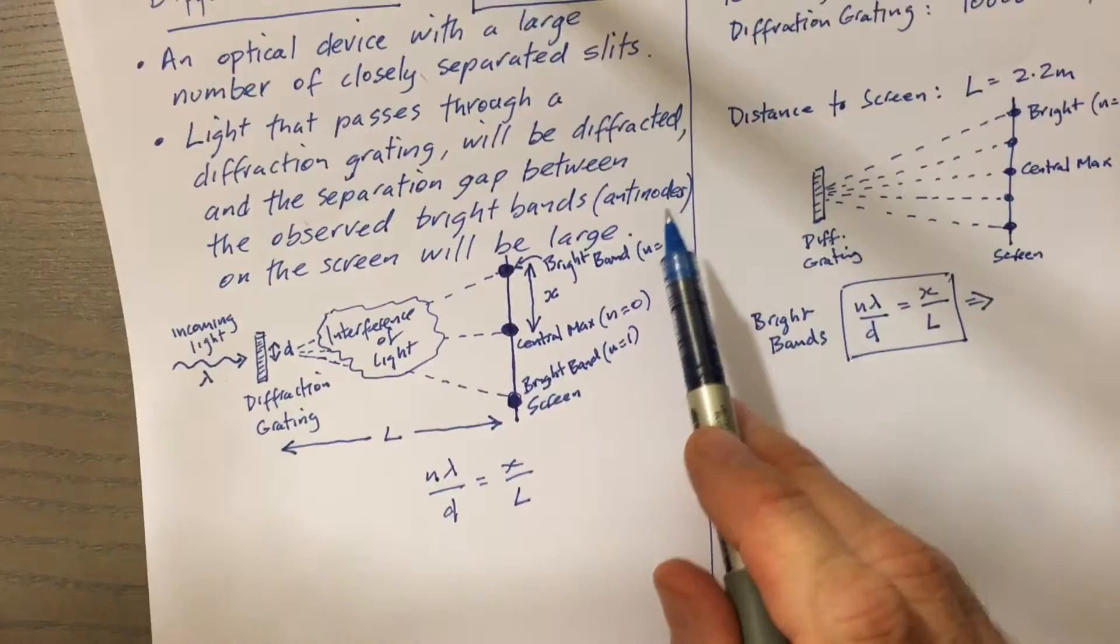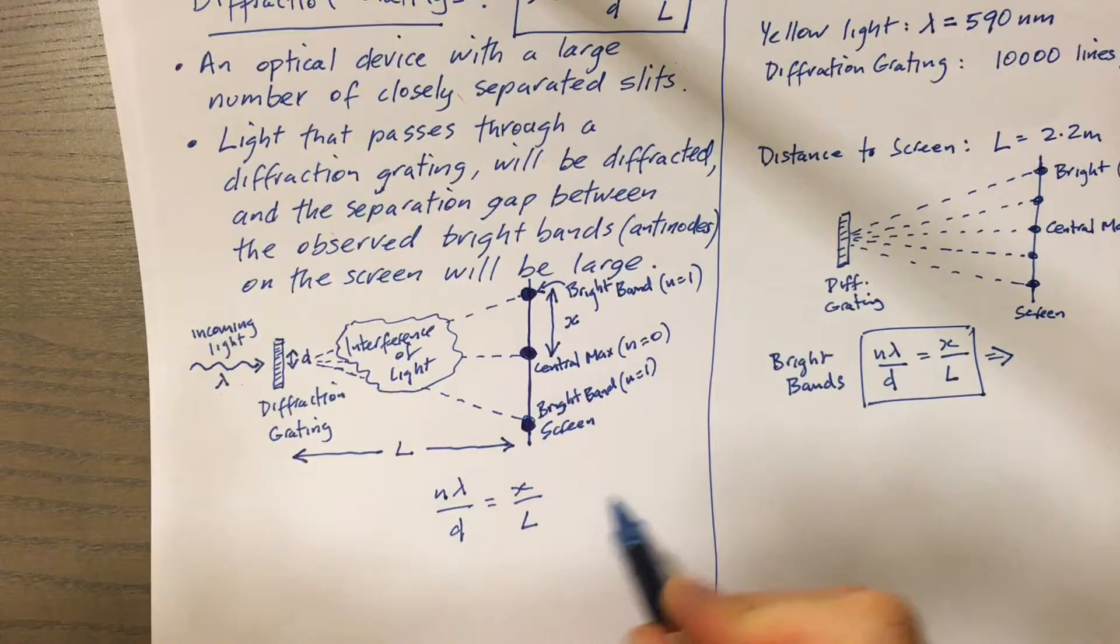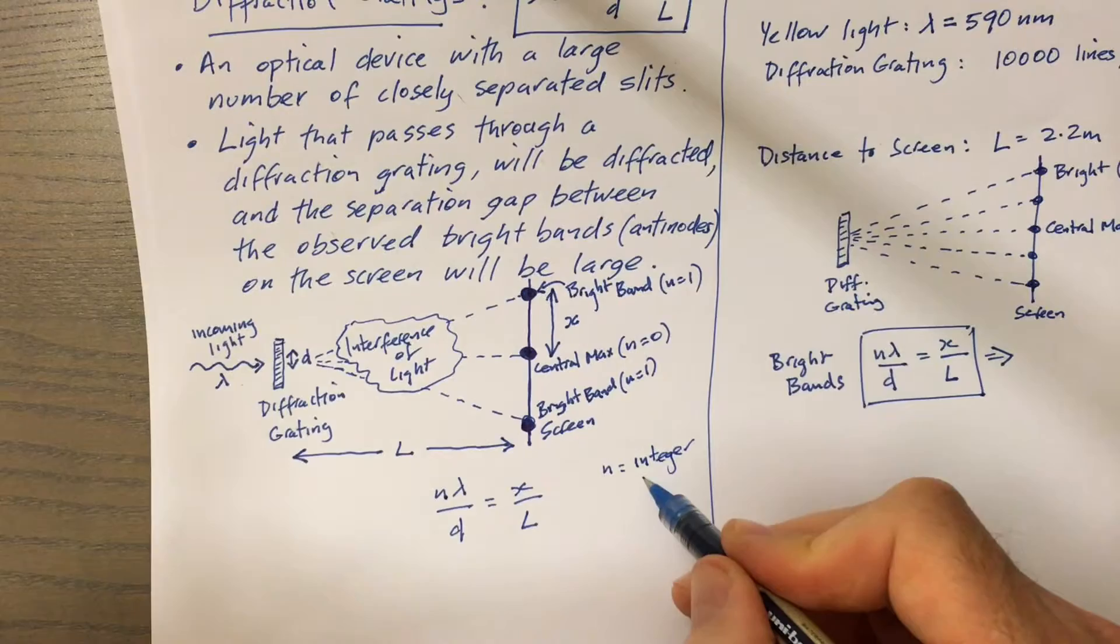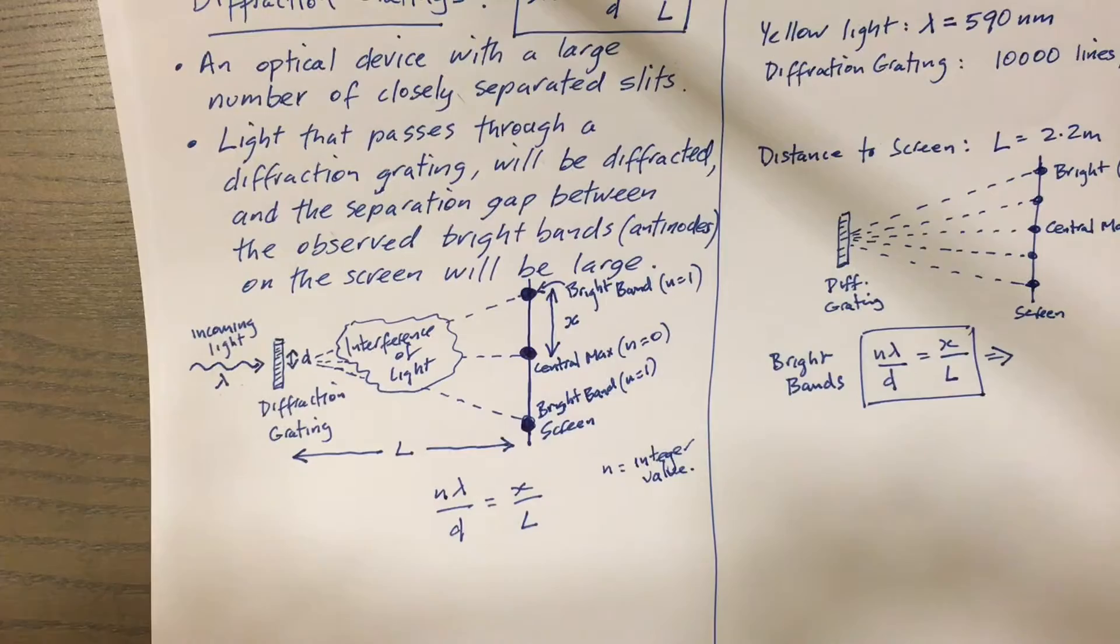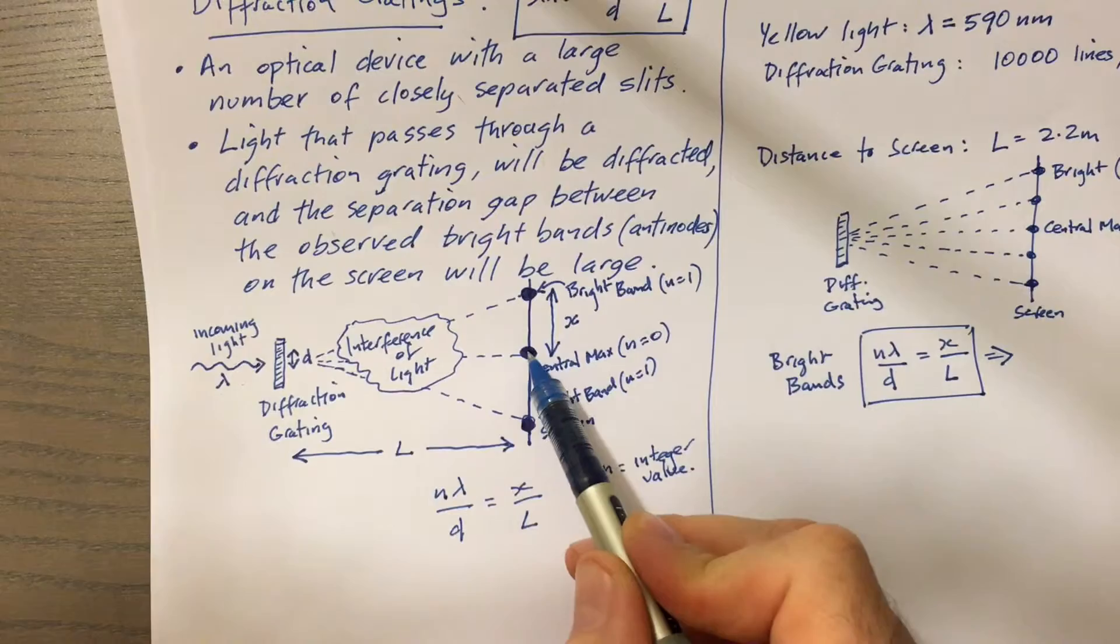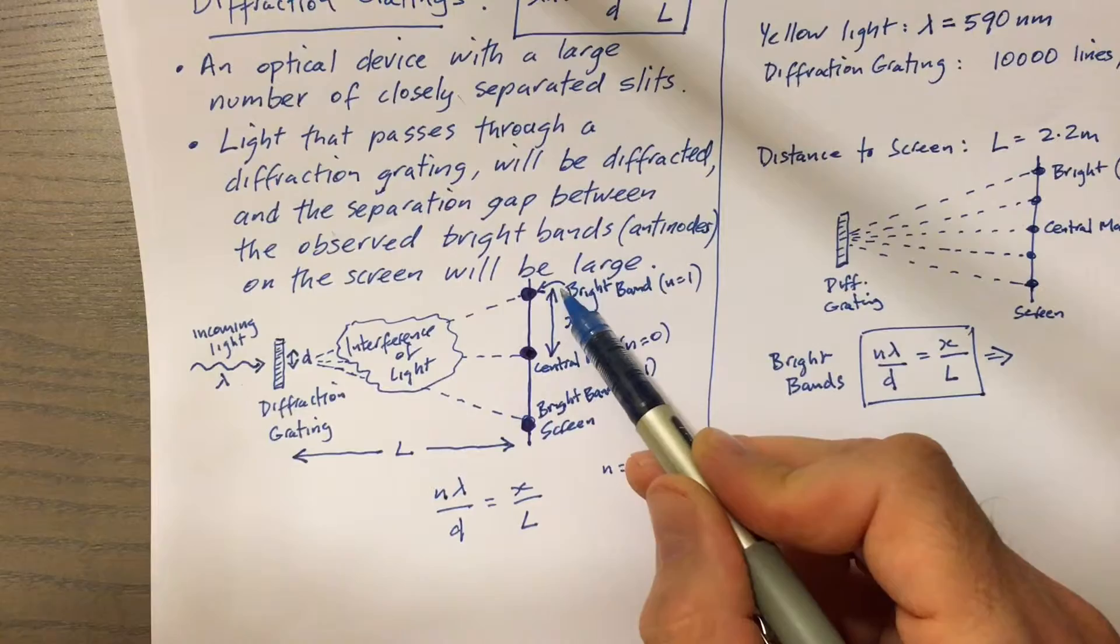So why does that work? We can see that in the formula. I've just written the formula here again, just the main components we're going to focus on. Remember n is the integer value for the bright band. That's starting at zero. We don't tend to use n equal to zero, but n equal to zero represents the central maximum or the bright band in the middle.